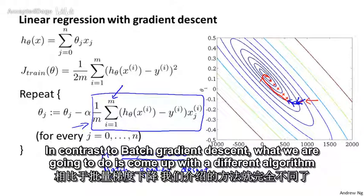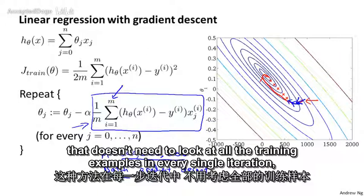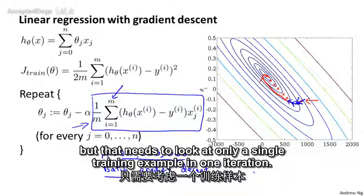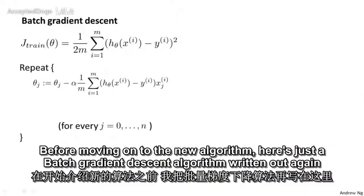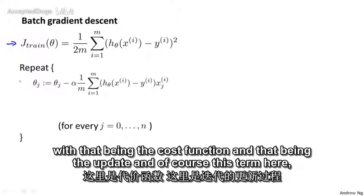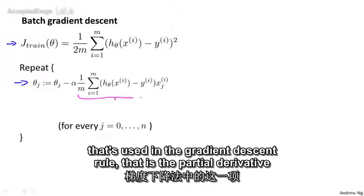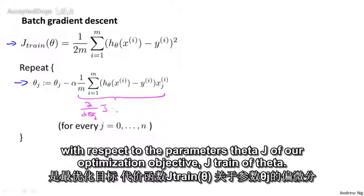In contrast to batch gradient descent, we're going to come up with a different algorithm that doesn't need to look at all of the training examples in every single iteration, but only a single training example in one iteration. Here's batch gradient descent written out, with that being the cost function and that being the update. This term used in the gradient descent rule is the partial derivative with respect to parameters theta_j of our optimization objective, J_train of theta.